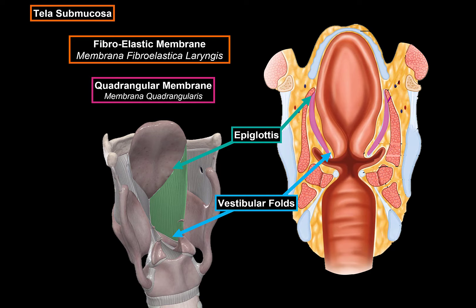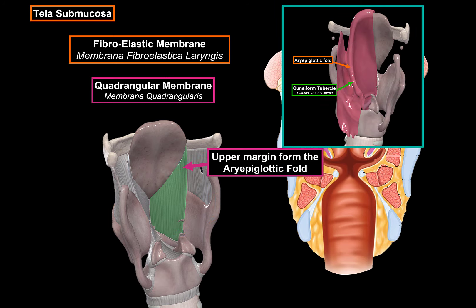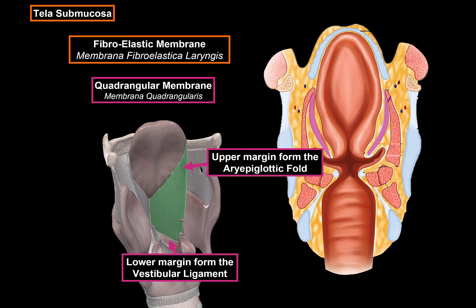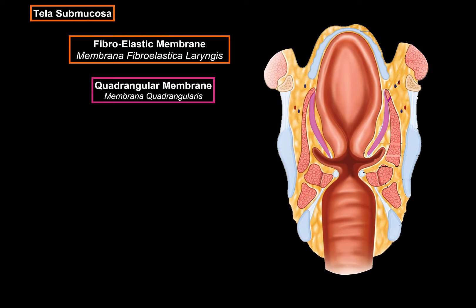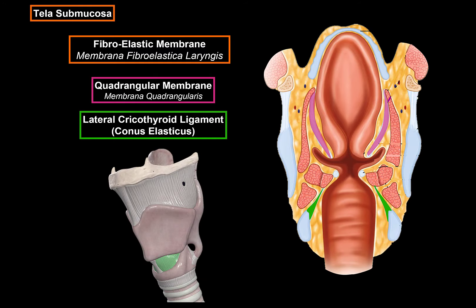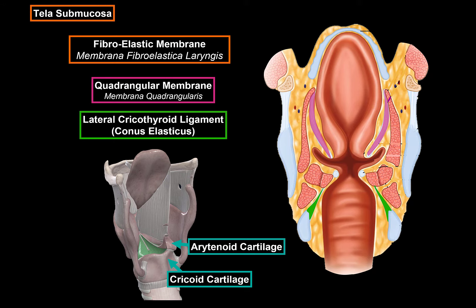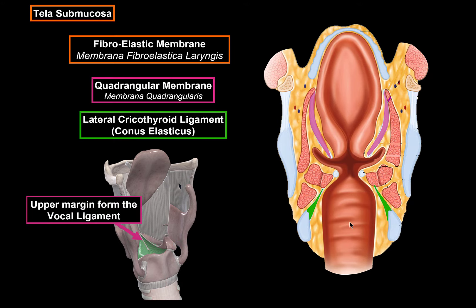There are two margins left that aren't connected to anything. The upper margin forms the aryepiglottic fold — a fold lining the entrance of the larynx. The lower margin forms the vestibular ligament, going between the arytenoid cartilage and the thyroid cartilage. The other fibroelastic membrane is the conus elasticus, or the lateral cricothyroid ligament. It's connected to the cricoid cartilage, the arytenoid cartilage, and the thyroid cartilage, but has one free upper margin which forms the vocal ligaments. This ligament is part of the vocal fold, which makes it possible to speak once they vibrate.